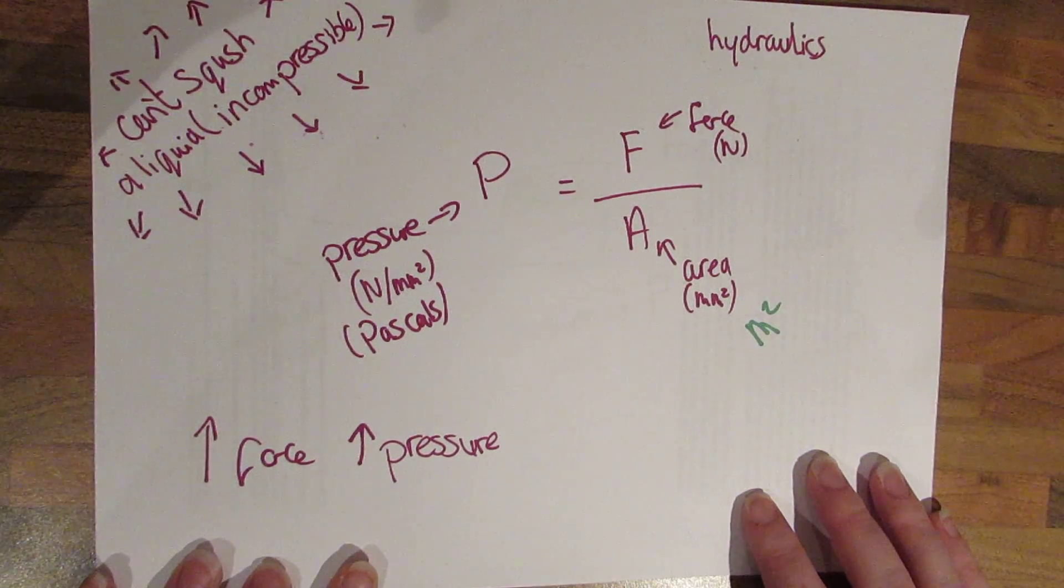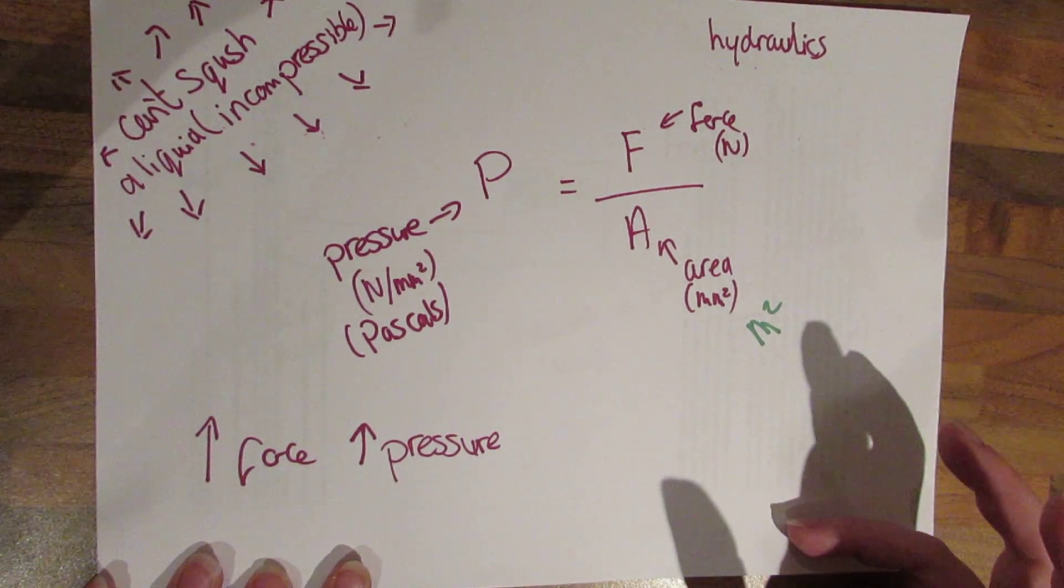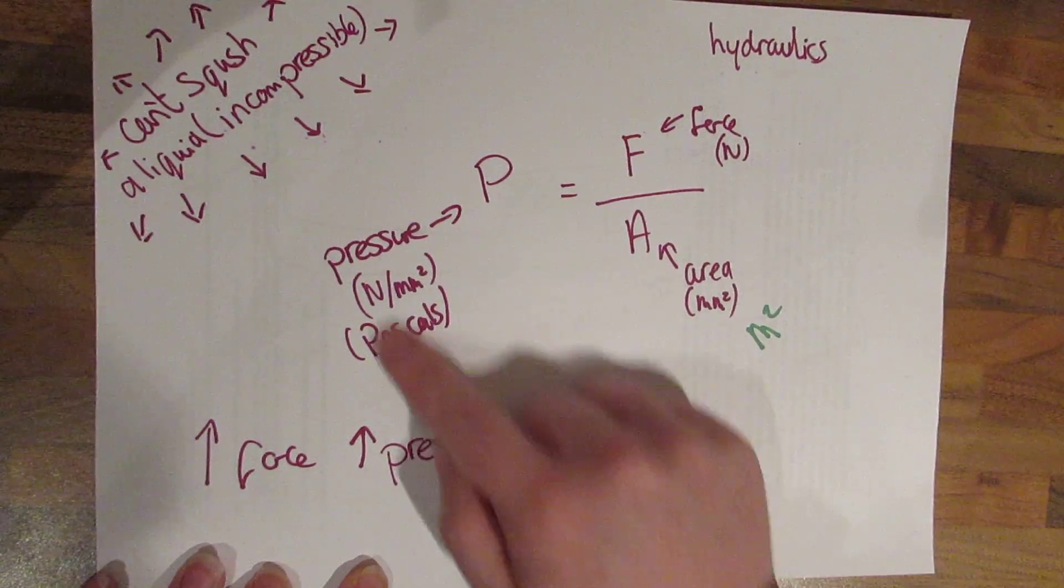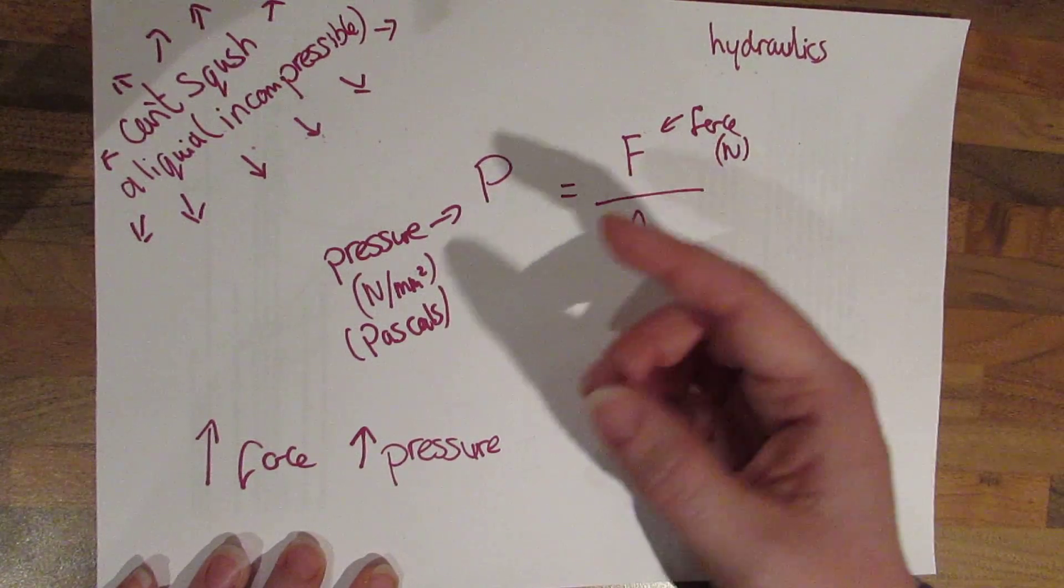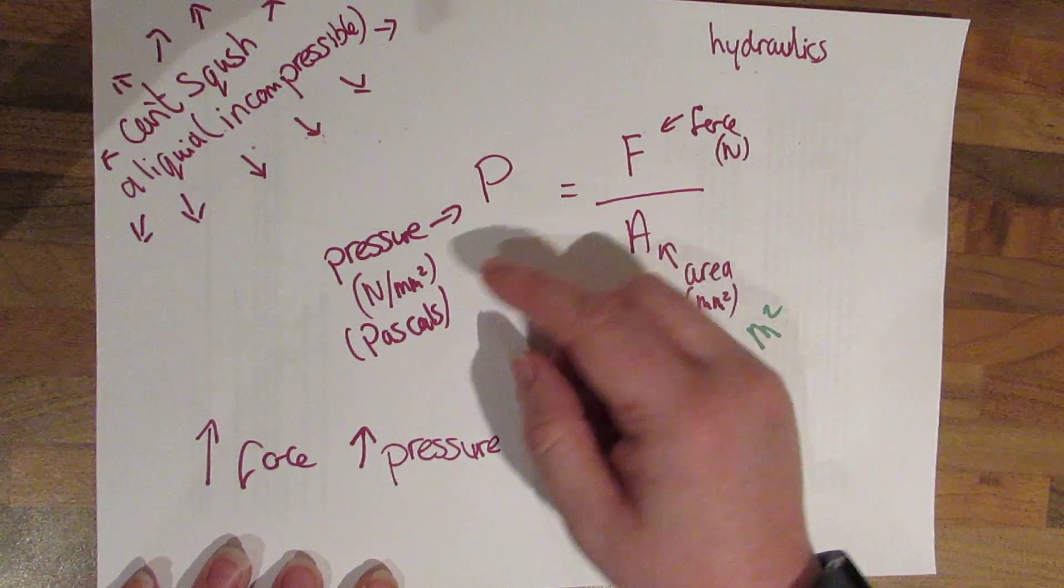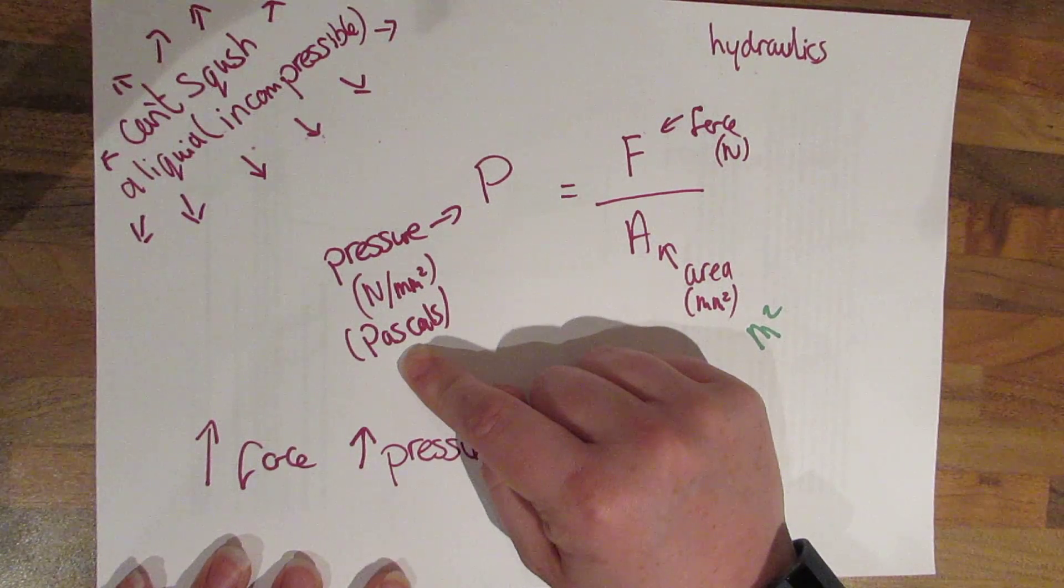In a hydraulic system, you need to know that liquids can't be squashed. The word they love to see is incompressible, and this is the equation we're going to be using. So pressure, and I've seen this written in the exam in a couple of ways. Newtons per millimetre squared, or the much more common way, is in pascals.